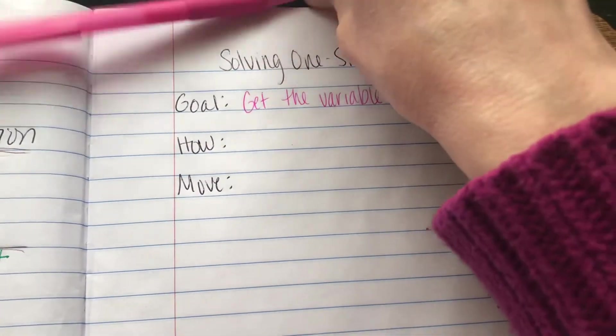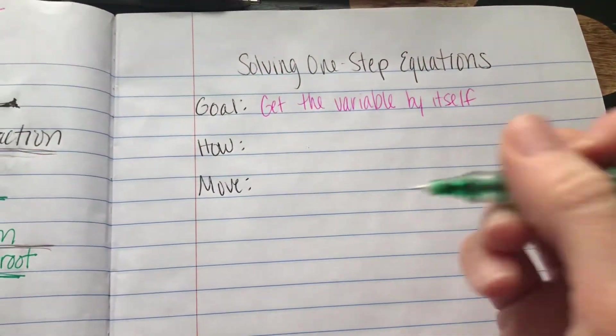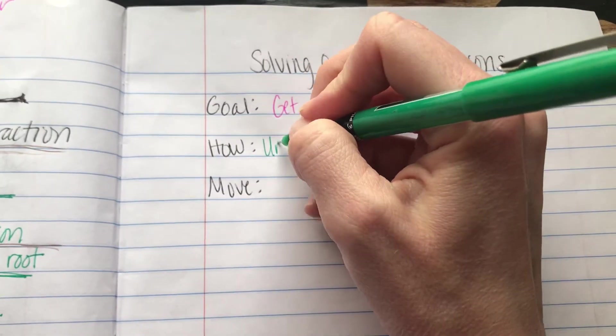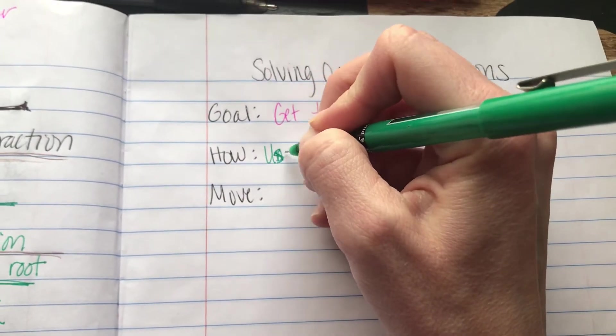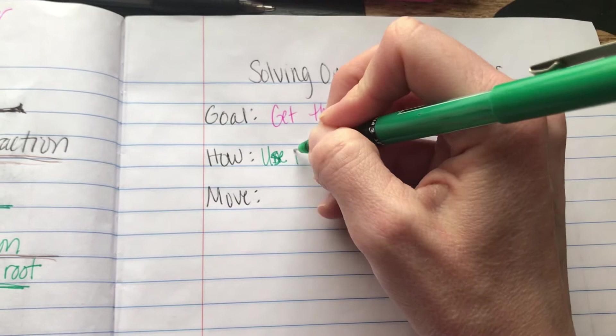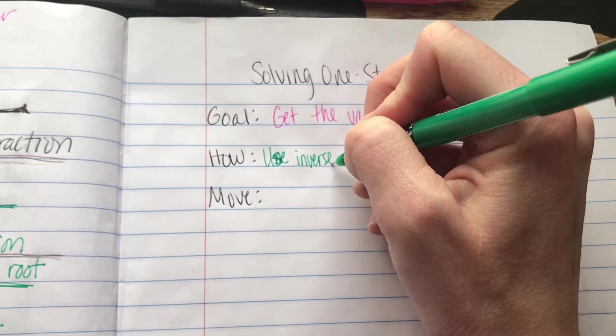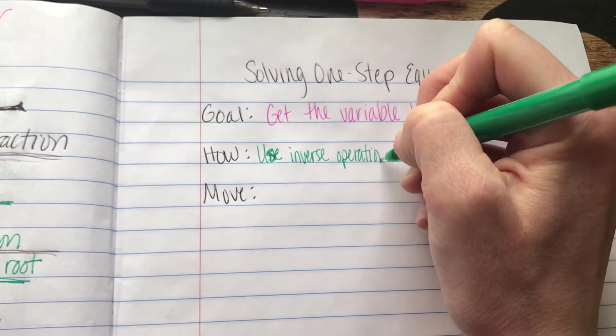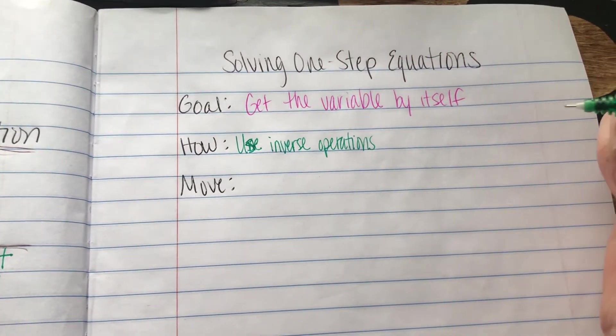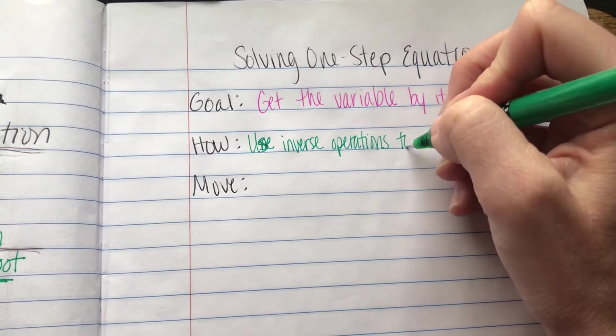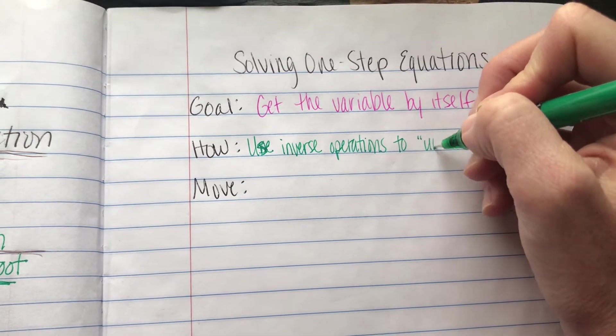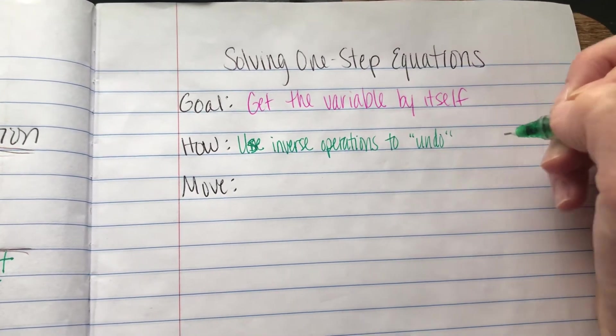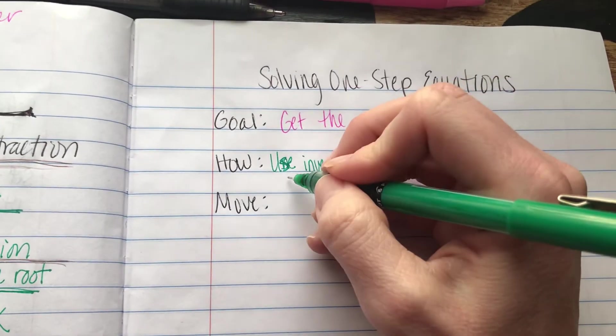So how do we do that? We're going to use inverse operations to undo whatever was done to the variable to begin with.